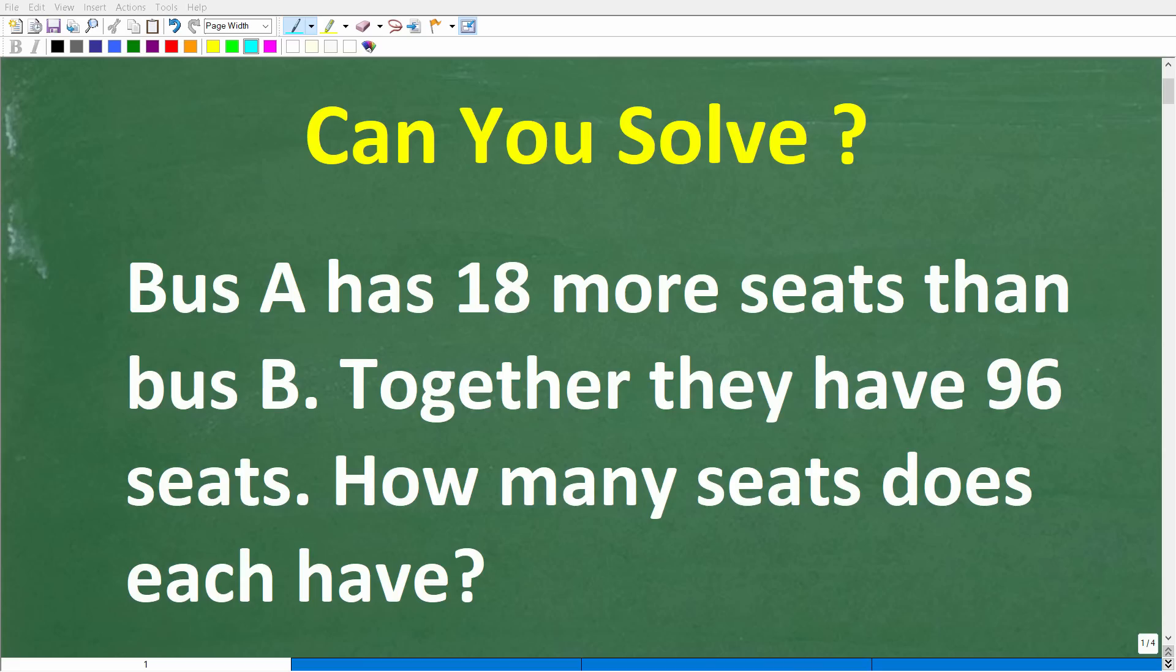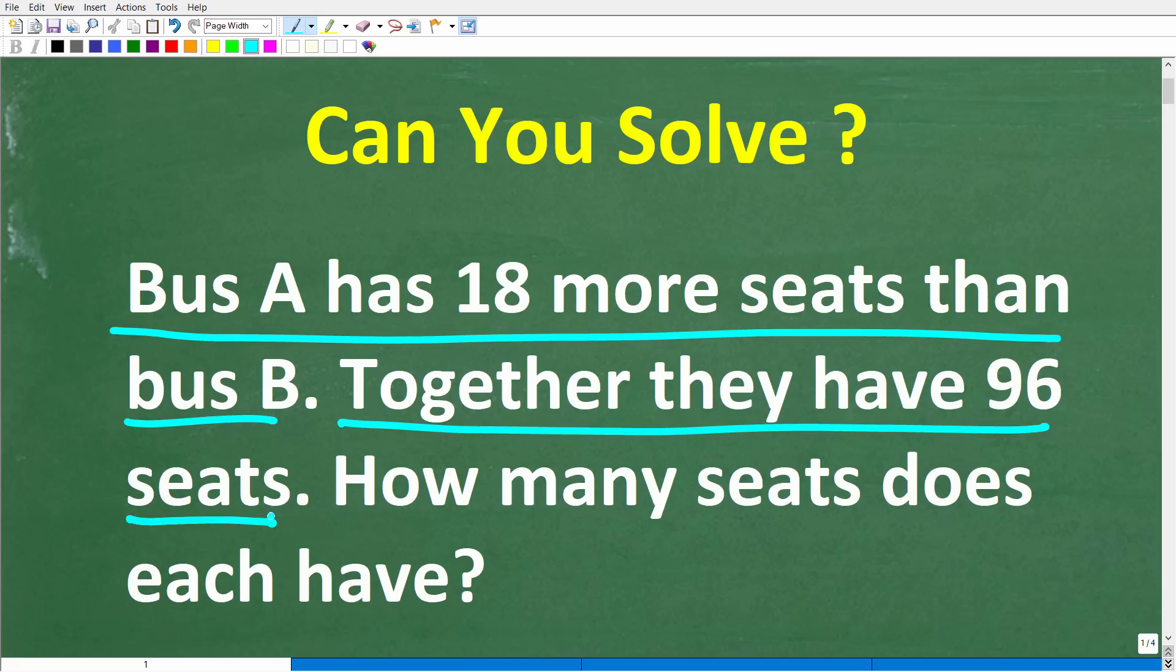Okay, so let's see if you have the math skills needed to solve this math word problem, which is the following. Bus A has 18 more seats than Bus B. Together they have 96 seats. How many seats does each bus have?